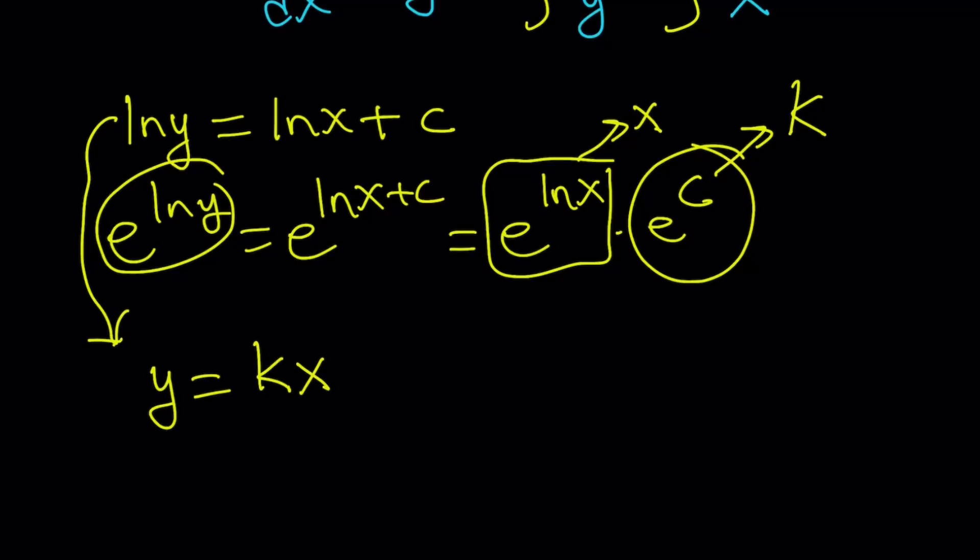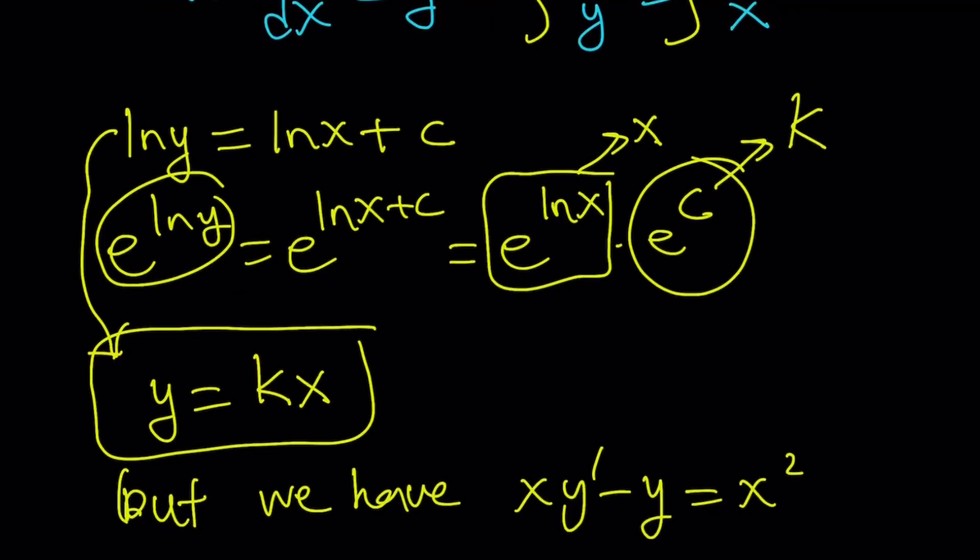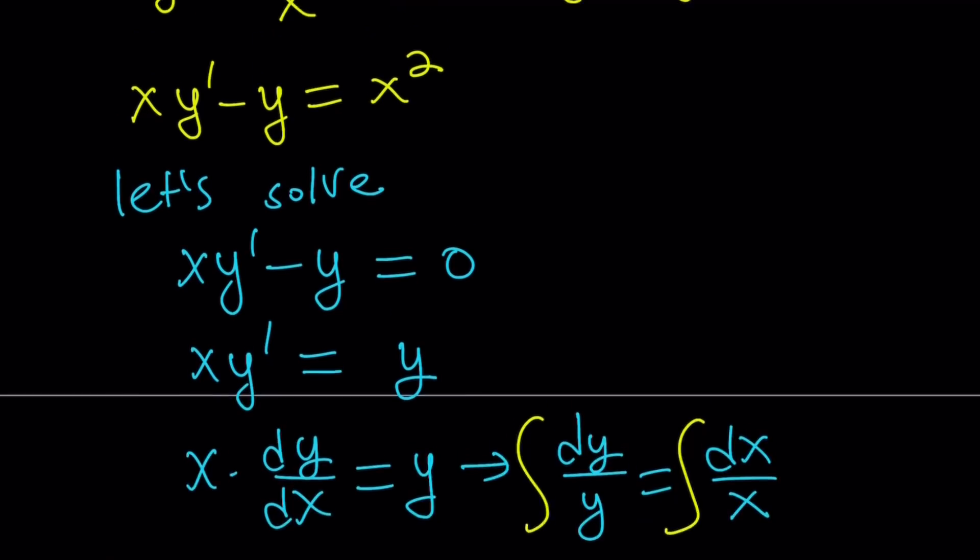But this is just the homogeneous version. But we do have, but we have xy prime minus y equals x squared. That was our original equation, right? Okay.